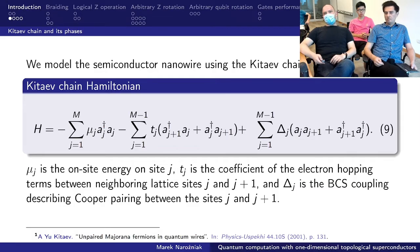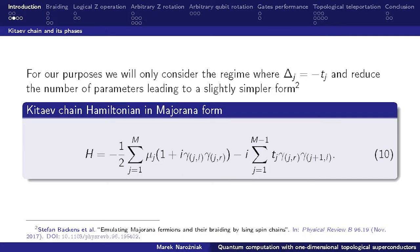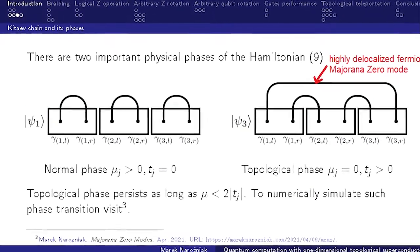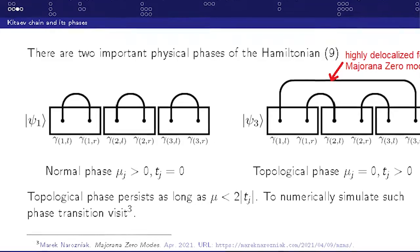If we allow to fix delta equals negative T and replace regular fermions with Majorana fermions, because as you saw earlier they're equivalent, we get the Kitayev chain model Hamiltonian in even simpler form.